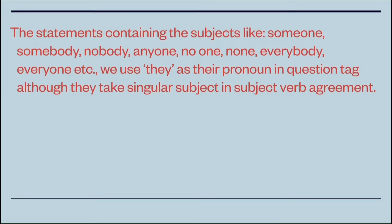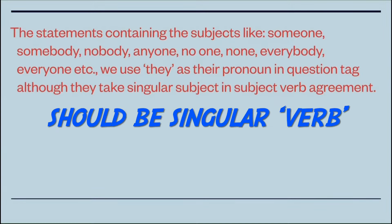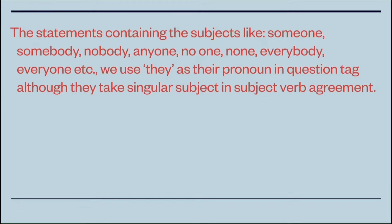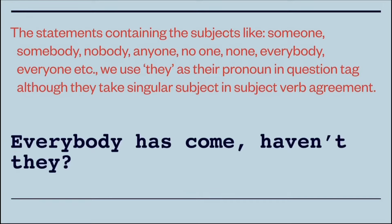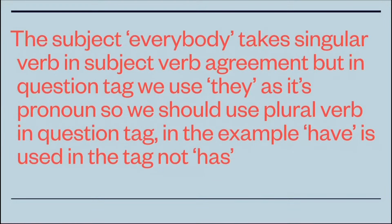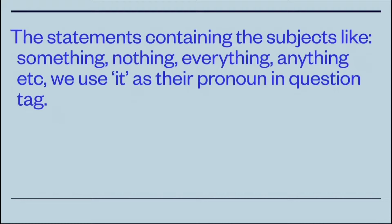Statements containing subjects like 'someone,' 'somebody,' 'nobody,' 'anyone,' 'no one,' 'none,' 'everybody,' or 'everyone' use 'they' as their pronoun in the question tag, although these subjects take a singular verb in subject-verb agreement. For example, 'Everybody has come' — even though 'has' is used, we make 'haven't they' in the question tag, using the plural verb because the pronoun is 'they.'